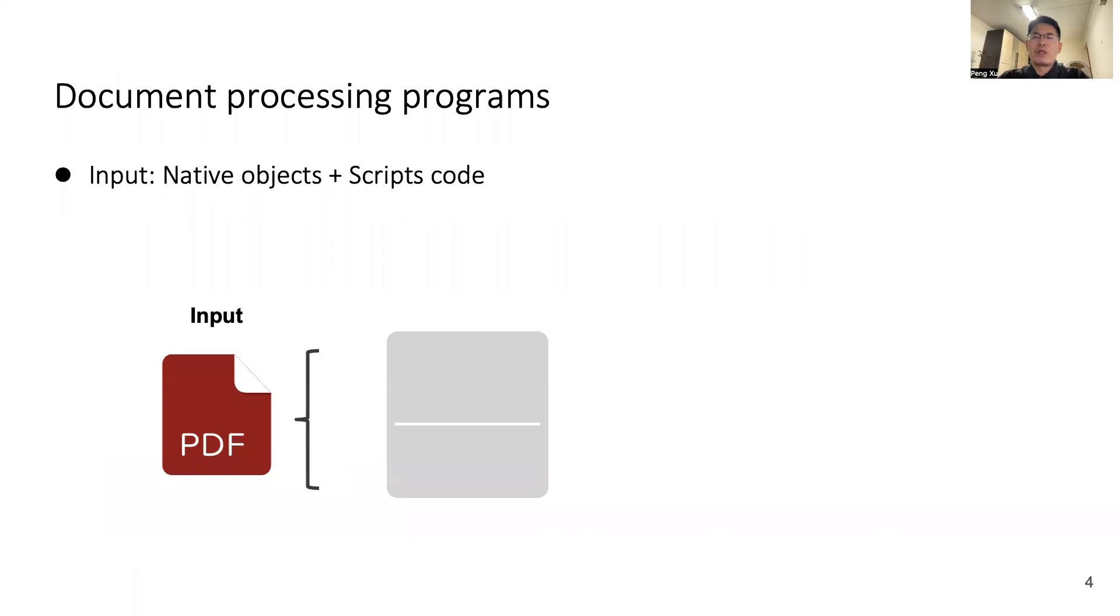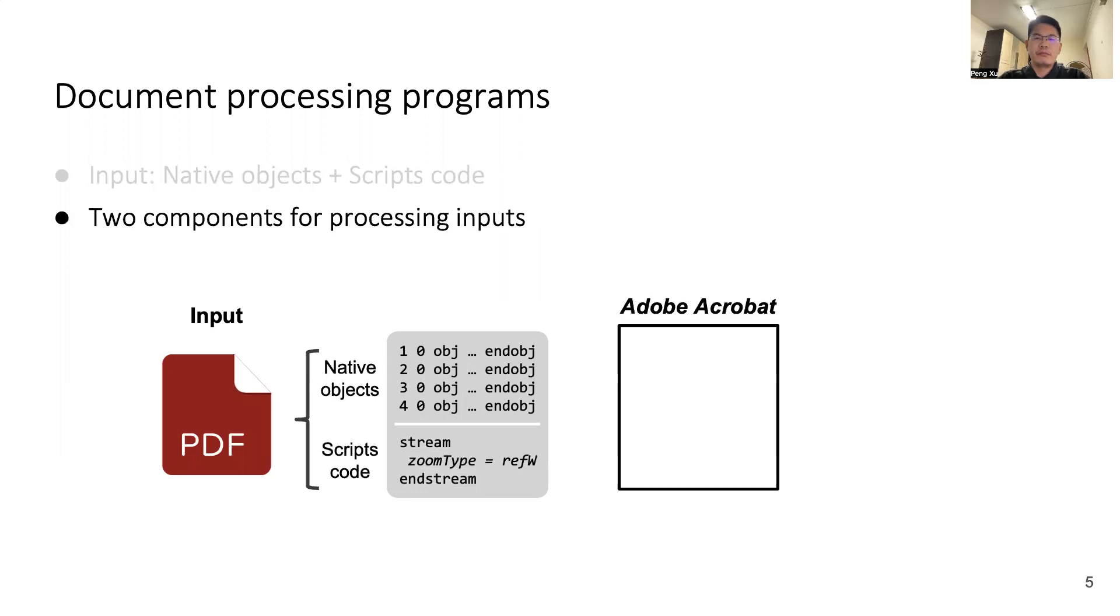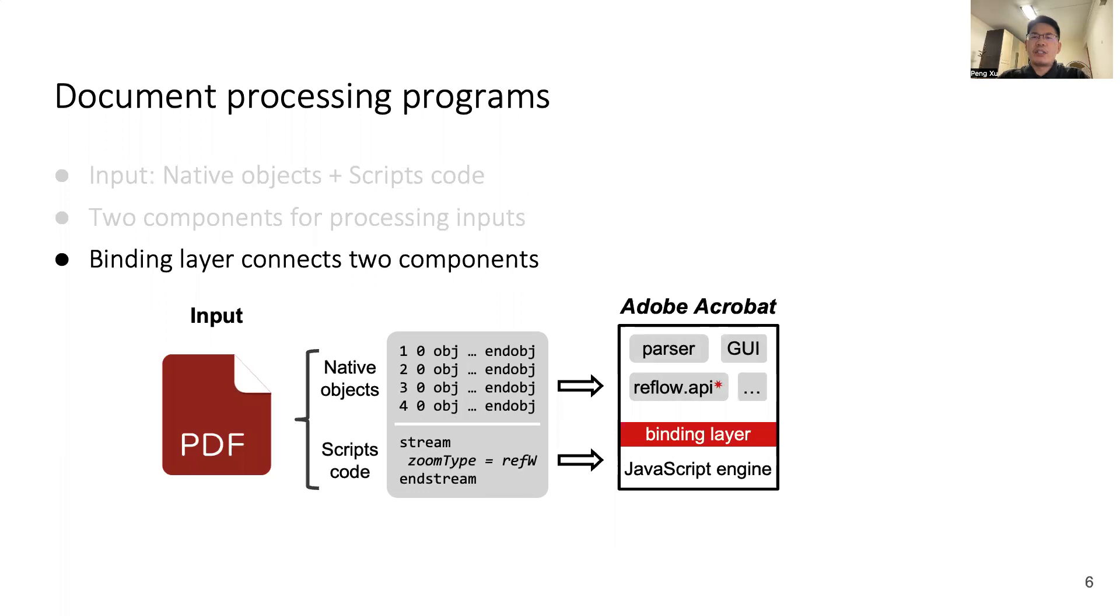First of all, let's look into the internals of document processing programs. The input contains two parts: native objects represent figures, texts, and annotations; scripts code contains scripting languages, like JavaScript code. The program also has two components to process inputs. They have native code to handle native objects, and use language interpreter to execute scripts code. To connect two different components, these programs usually have a binding layer to do translation. However, the binding layer is too complicated to be 100% correct, and bugs are inevitable.